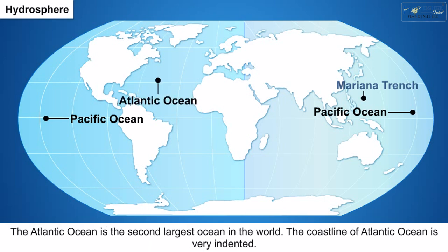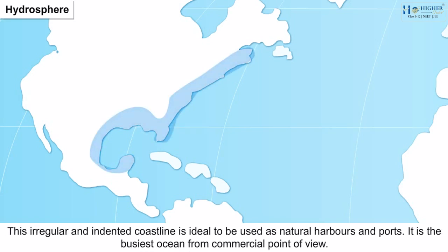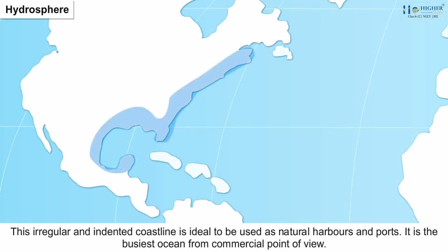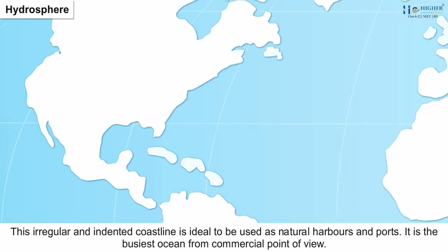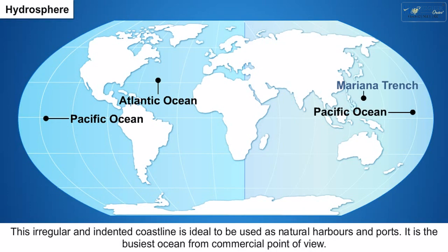2. The Atlantic Ocean is the second largest ocean in the world. The coastline of the Atlantic Ocean is very indented. This irregular and indented coastline is ideal for use as natural harbours and ports. It is the busiest ocean from a commercial point of view.